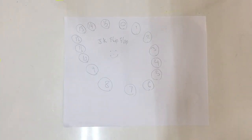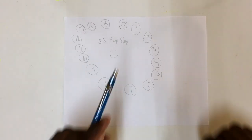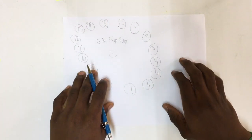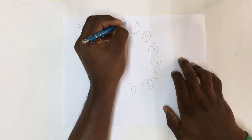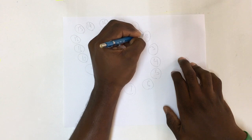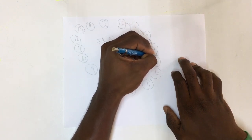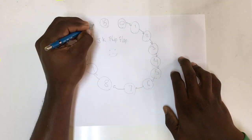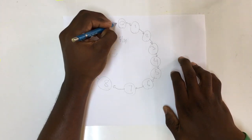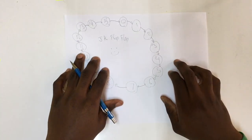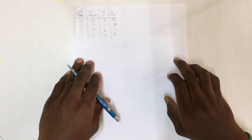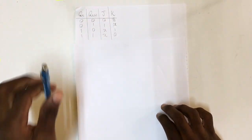Welcome, my name is Rashawn. Today we'll be focusing on JK flip-flops. We will be making a circuit which counts from 0 to 15 sequentially. What we're trying to achieve is counting from 0 to 1, 1 to 2, 2 to 3, and so on, and then back to zero — this is what we're trying to achieve using the JK flip-flop.